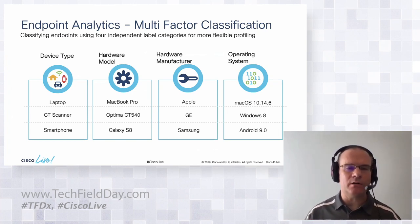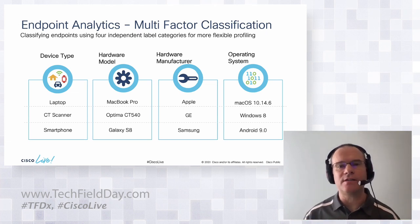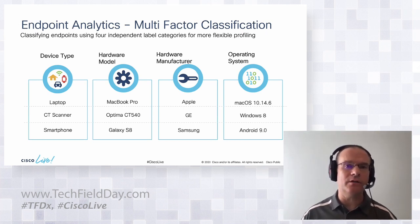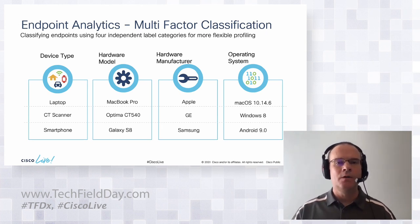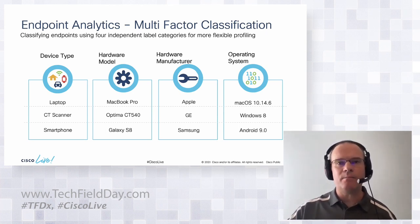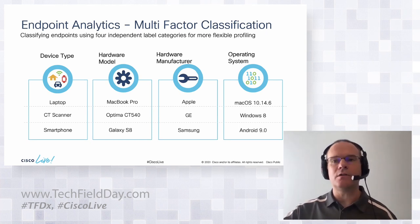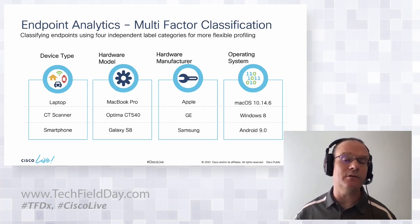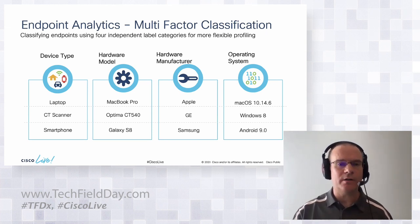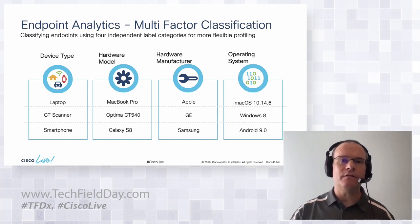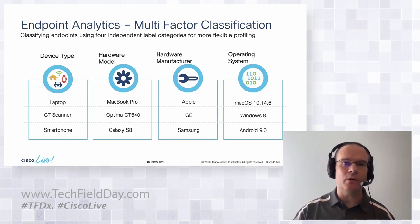What we're trying to do with endpoint analytics is develop a multi-factor classification function: understand the device type, the hardware manufacturer and model, as well as the operating system. Just putting devices into groups of classifications doesn't mean it's a business-relevant group. We're trying to give the end user all relevant information to say this endpoint belongs to building and automation, this one belongs to security systems, this one belongs to a medical clinical engineering environment — so the customer can use other tools to build the functional role in the environment and start moving from an open network to a closed network.